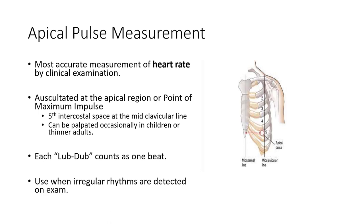Apical pulse - if we don't have access to an ECG and we detect someone's dropping some beats or has an irregular rhythm when we're palpating pulse rate, if we want to get a measure of heart rate and we don't have any ECG or a polar device, you can actually listen to the heart directly. We listen over an area called the point of maximum impulse, in the mitral region at the fifth intercostal space midclavicular line, where we hear the heart most pronounced. Each lub-dub, lub-dub sound counts as one beat, as that's a completion of a cardiac cycle - S1, S2.